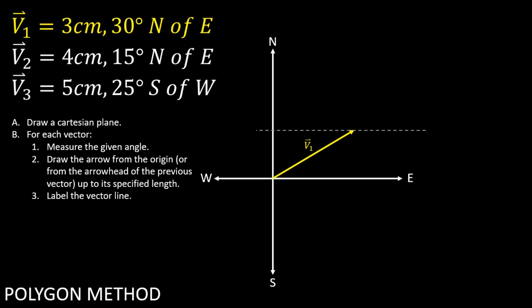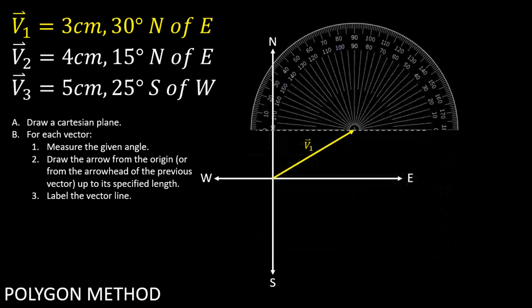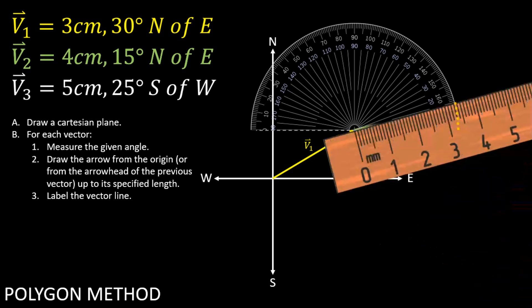You can now properly align the straight side of your protractor to the dashed line you just drew, placing its center at the endpoint of vector 1. You may now proceed doing the same procedures for the second vector.